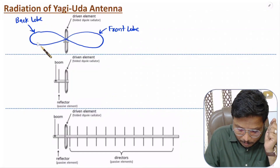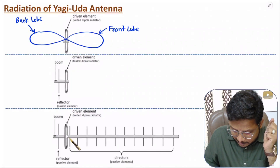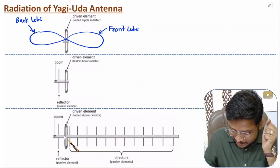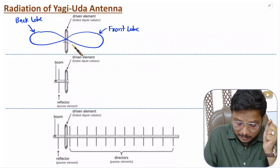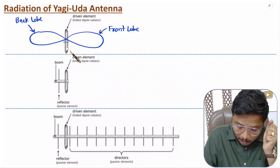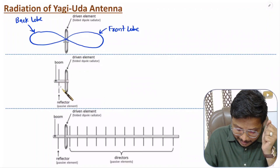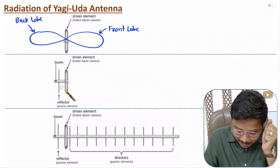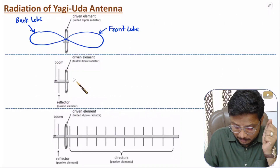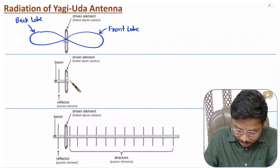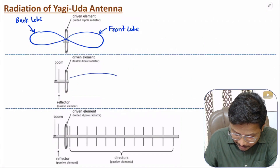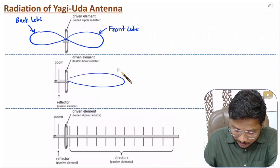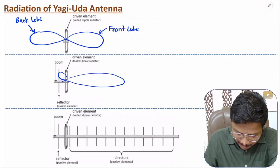You might be thinking why one is the back lobe and one is the front lobe. In the resultant structure, we want to radiate in the front direction, so that is why I consider one as front and the other as back. If you connect a reflector element towards the back side, this reflector element will reflect power in the front direction. Because of the reflector element, whatever power is going towards the back side gets reflected in the front direction, so radiation increases towards the front and we have minor lobes towards the back.